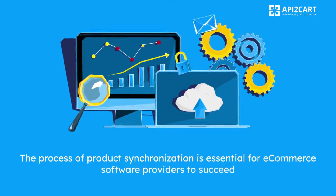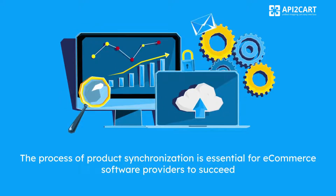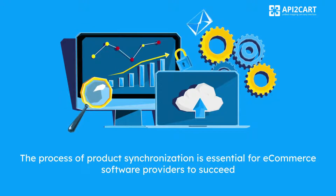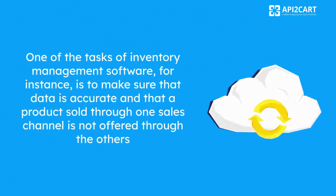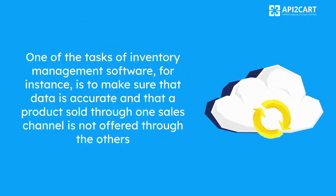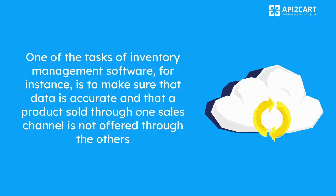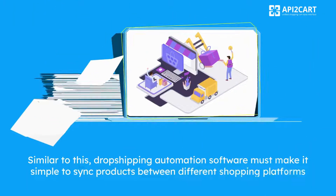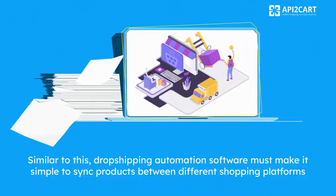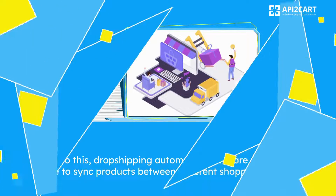The process of product synchronization is essential for e-commerce software providers to succeed. One of the tasks of inventory management software, for instance, is to make sure that data is accurate and that a product sold through one sales channel is not offered through the others. Similarly, dropshipping automation software must make it simple to sync products between different shopping platforms.